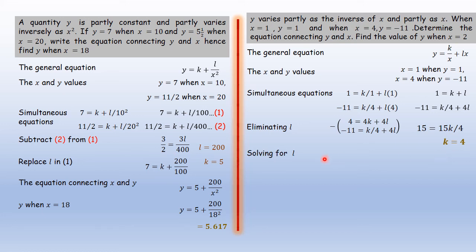Now, the value of l can be obtained if we replace the value of k in any of the equations. Let's replace in the first equation. k is 4, put it here, in this equation. You're going to have 1 = 4 + l. And therefore, l = -3.